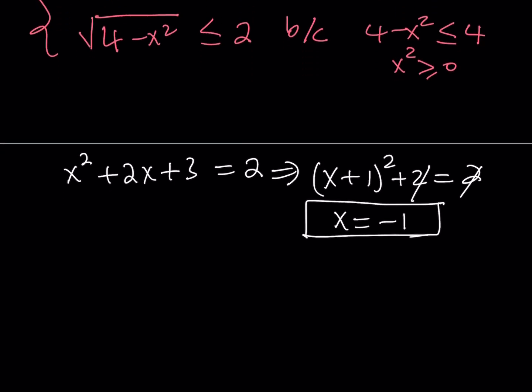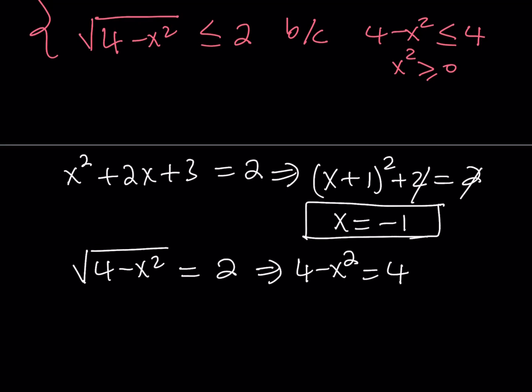Let's go ahead and take a look at the second one, which is the radical. We said that the square root of 4 minus x squared needs to equal 2 because that's the only way the left hand side and the right hand side are going to equal each other. So this implies that if you square both sides, 4 minus x squared is going to equal 4. And from here, we're going to get x squared equals 0, which implies that x equals 0.